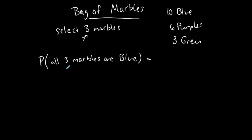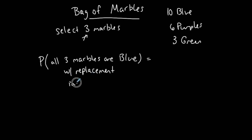In this case, let's do with replacement. That means I'm going to the bag of marbles, picking a blue, putting it back, then going back to the bag, picking another blue, putting it back — replacing it every single time. That means I have independent events; all three events are independent. Because it's the multiplication rule, we're going to multiply.